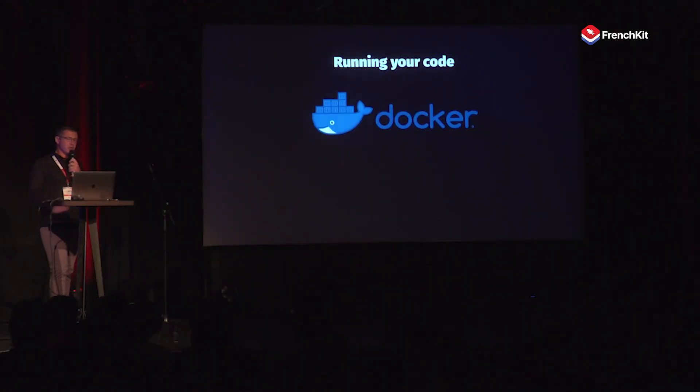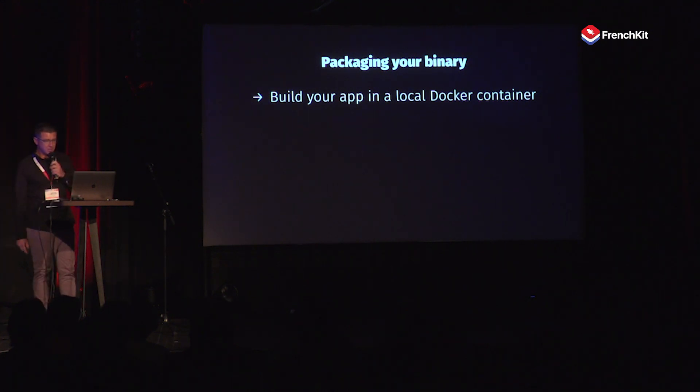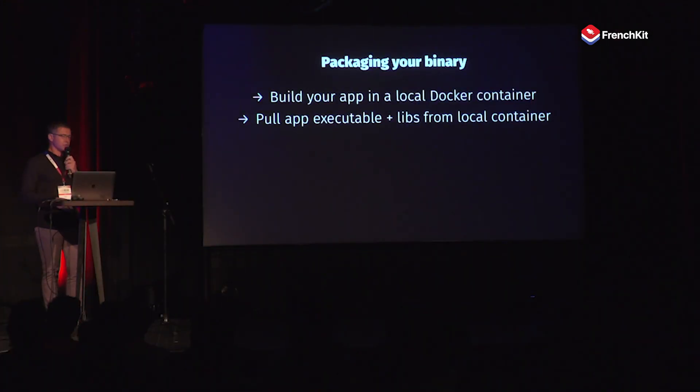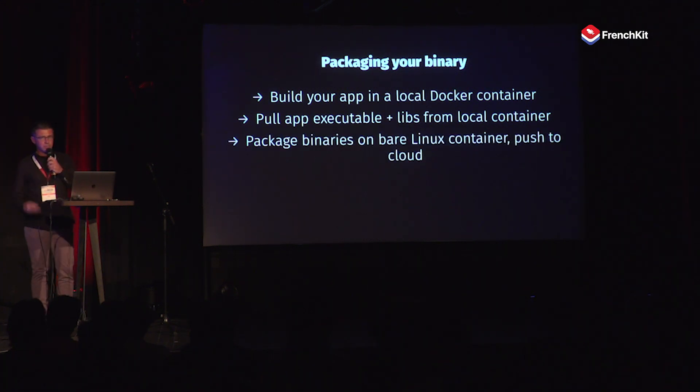When it comes to building, testing, and running code on Linux, it's a good idea to use Docker containers. Docker containers free you from dependency on a specific cloud provider. There are Docker base images for multiple versions of Swift, and you can find example Dockerfiles on the net to get started quickly. For deployment, use a Docker container on your Mac to build your own Linux executable. Once it's built, pull the executable from the Docker image along with the libraries it uses, and push a Docker file to the cloud with your executable binary, the libraries, and the data you need. This way your source code never gets exposed to third parties.